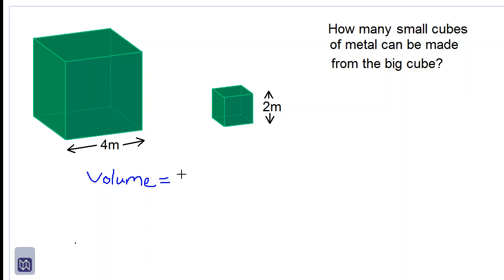For the big cube it will be 4 times 4 times 4. 4 times 4 is 16 times 4 is 64 meter cubed. Remember volume is in cubic units with a little three up here. So there's the volume of the big cube.